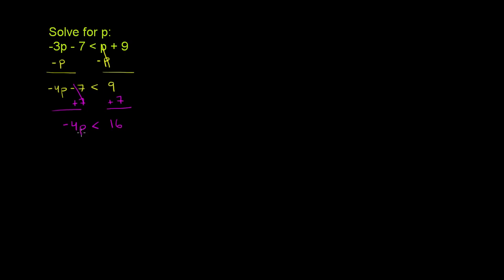Now the last step to isolate p is to get rid of this negative 4 coefficient. The easiest way to do that is to divide both sides by negative 4. There's one thing you really have to remember since this is an inequality, not an equation: if you multiply or divide both sides of an inequality by a negative number, you have to swap the inequality. So in this case, the less than becomes greater than, since we're dividing by a negative number.